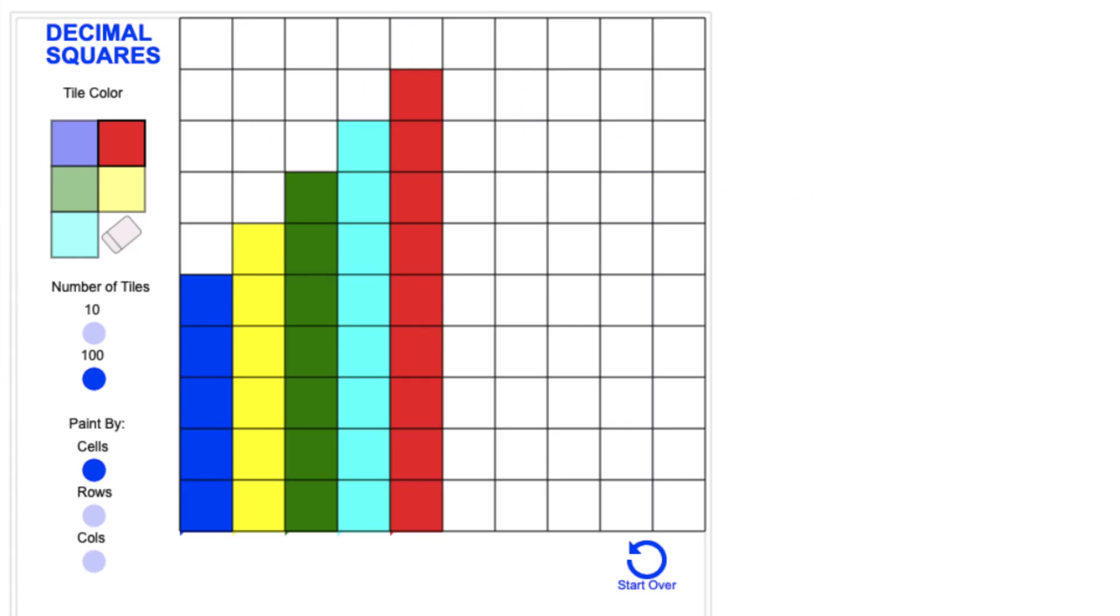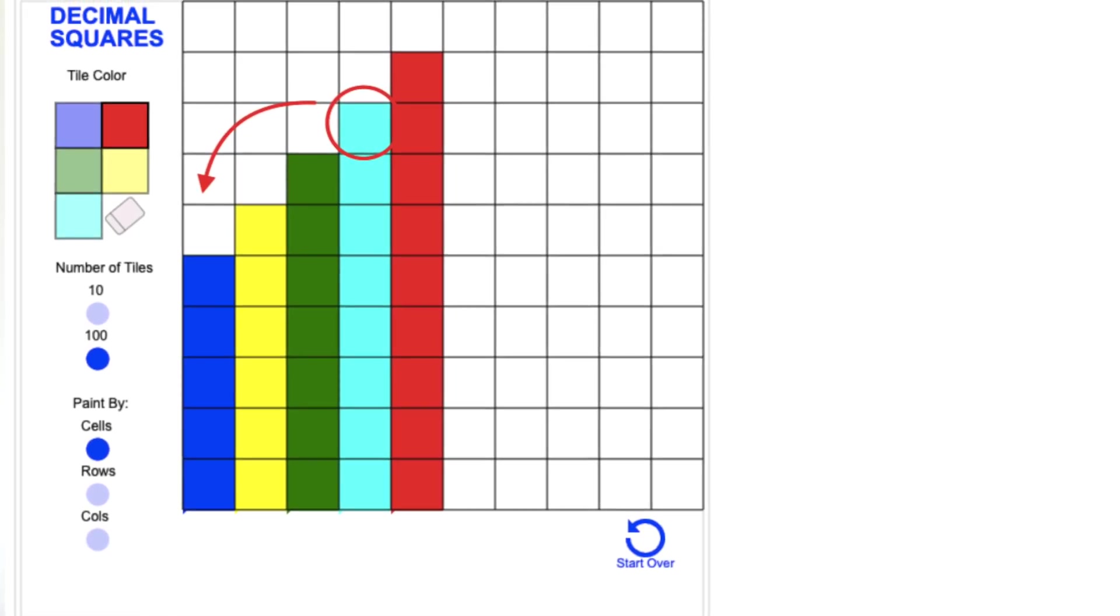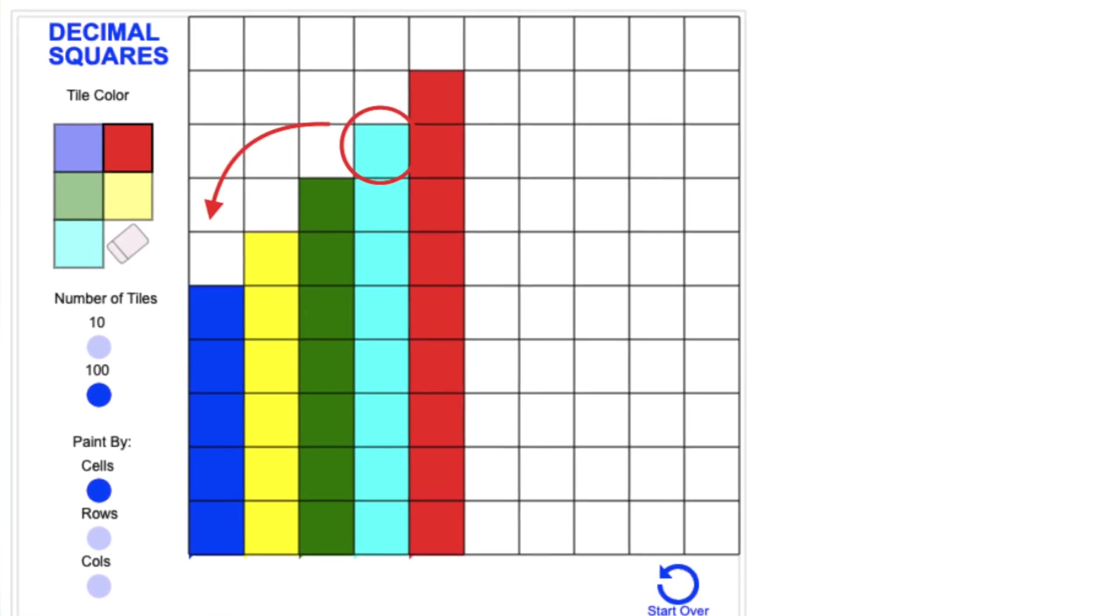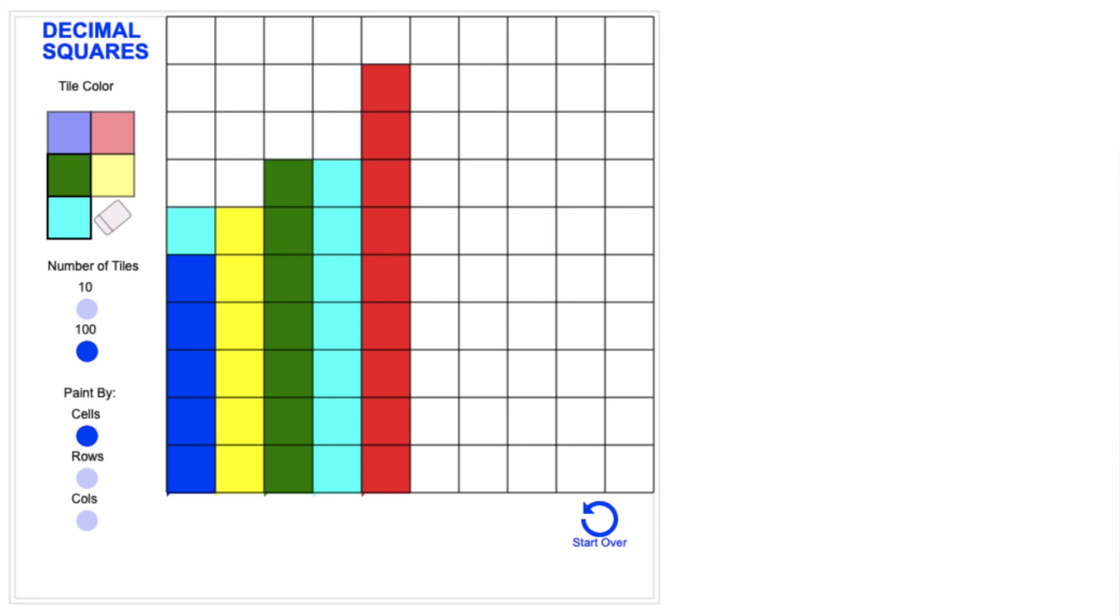You should have something that looks like this. Now what I'd like you to do is rearrange those towers so that they are all the same amount. Notice that when I move a block from this column to that column, I'm going to keep it the same color so that I can see what I'm actually doing.